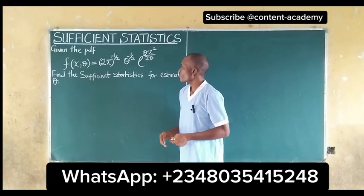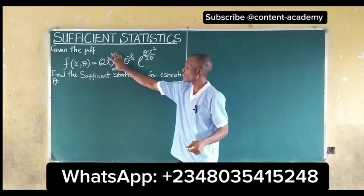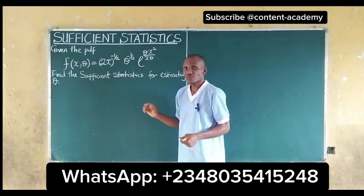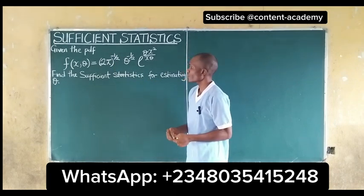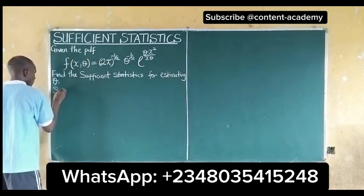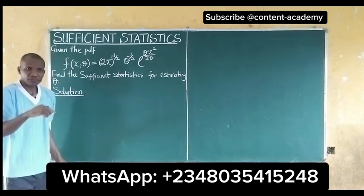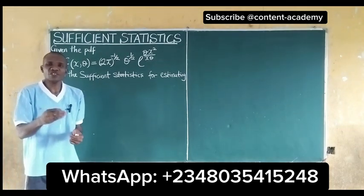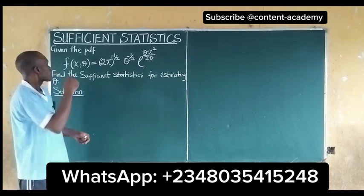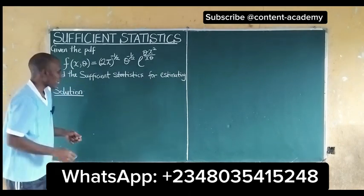In this video we'll find the sufficient statistics for estimating theta, given the PDF from a normal distribution or a normal population. So how do we go about it? The factorization theory is used in estimating sufficient statistics. For a statistic to be sufficient, it must satisfy the criteria.